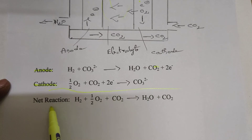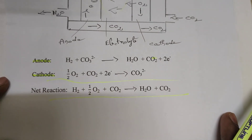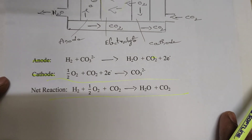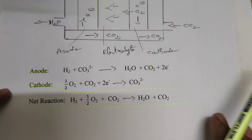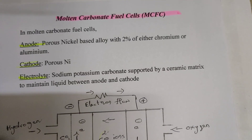The net reaction is: H₂ + ½O₂ + CO₂ → H₂O + CO₂. This is the overall reaction for the molten carbonate fuel cell.